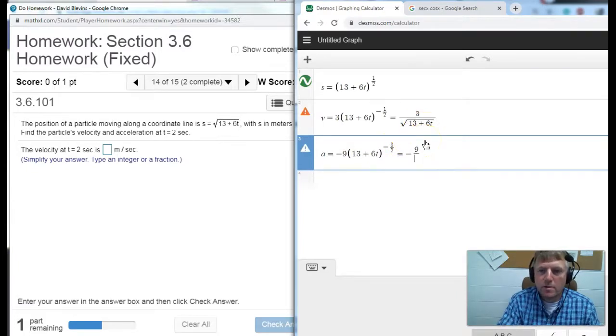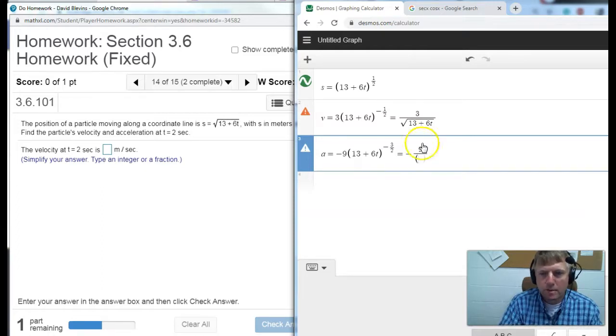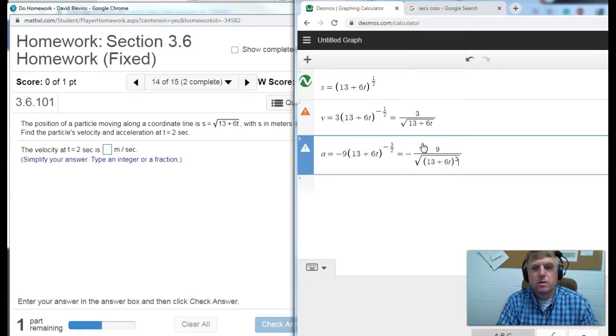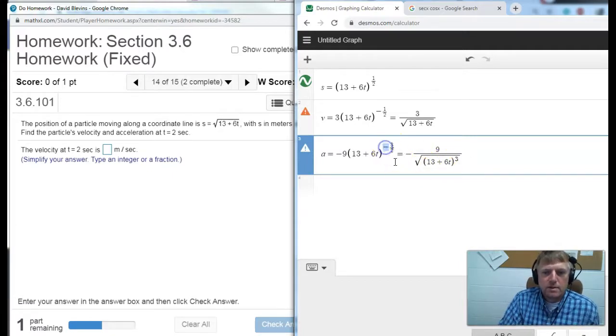So I'm going to have a negative 9 on the top divided by and then I could say this is the square root of parenthesis 13 plus 6t cubed using that exponent definition of roots and powers. This negative is not this negative, that's the negative that was out front. This negative just means it's down in the denominator so it moved us down in the denominator. And then the third power and the index on the root is 2. So that's what we get.